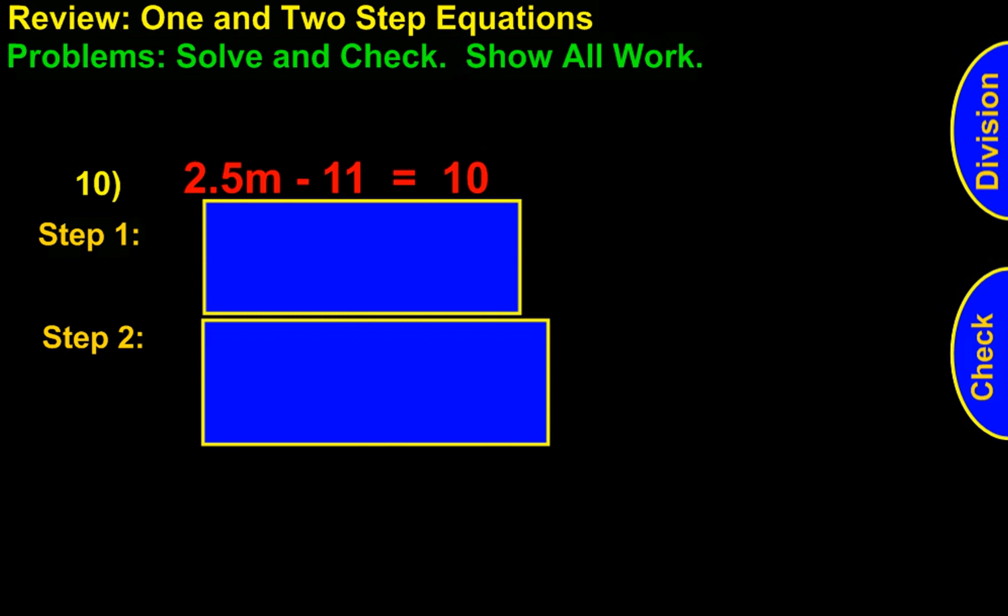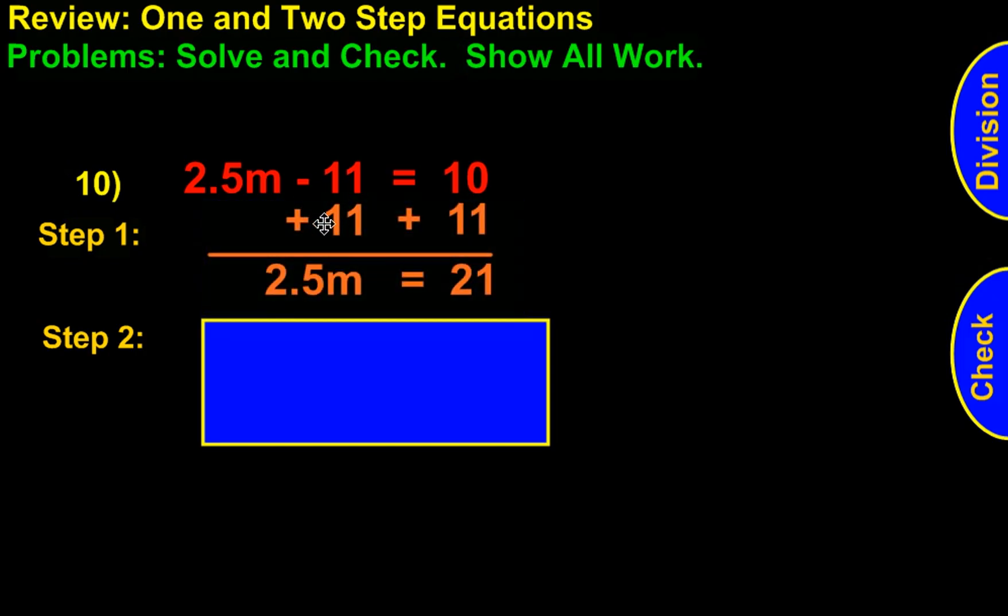For the next problem, we're looking at number 10. We have 2.5m minus 11 equals 10. The first thing we want to do is eliminate the 11, so we add 11 on both sides. That cancels the 11s out. The 2.5m comes down, equals 10 plus 11, which is 21.